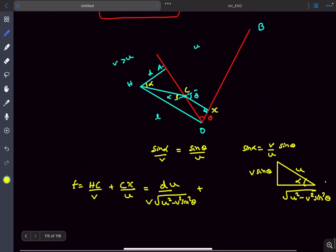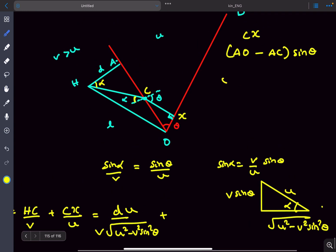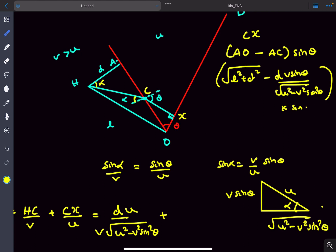Now what is CX? To find CX, from the length AO, let's subtract AC and take the sin theta component of it. From triangle OAH, AO is square root of L squared plus D squared. AC is D tan alpha. From this triangle, tan alpha equals V sin theta upon square root of U squared minus V squared sin squared theta. The whole thing multiplied by sin theta gives us the value of CX.